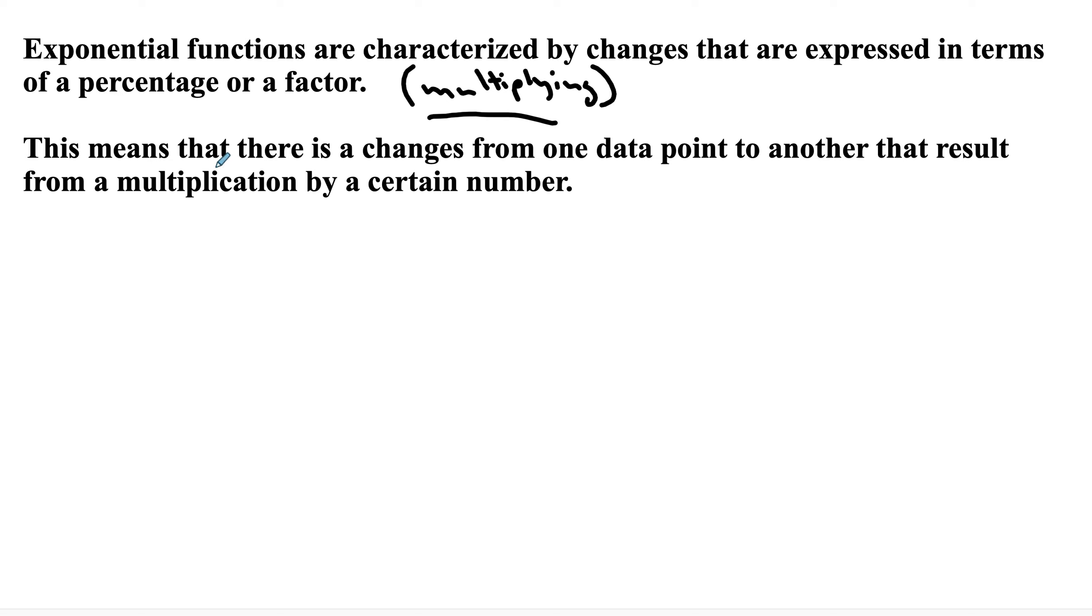Some would say we're looking at a constant ratio between the two events or series of things. So from one data point to another, that looks like multiplication, that would imply that you're looking at exponential.